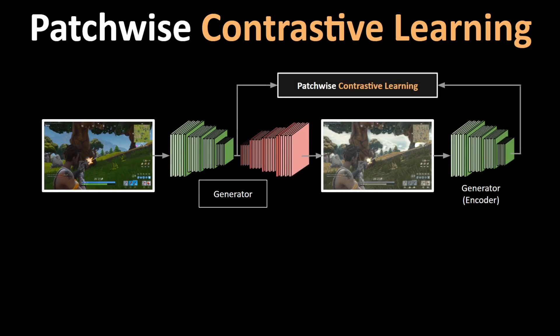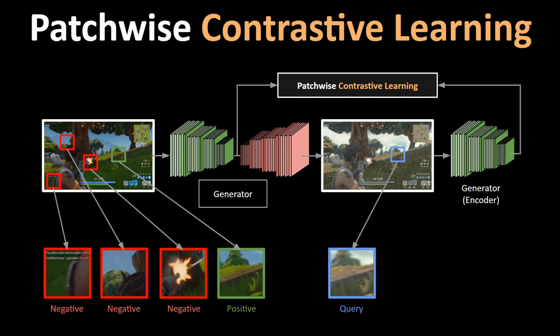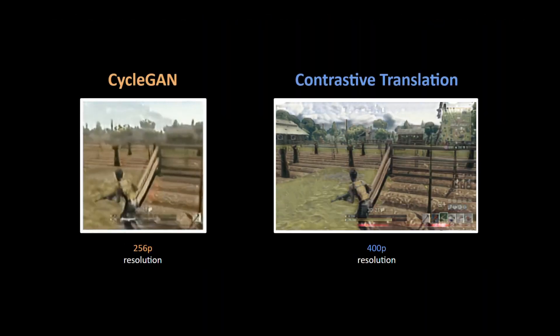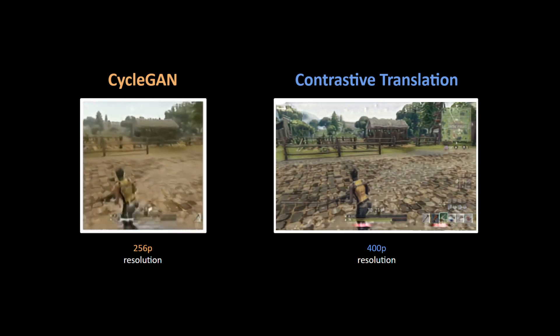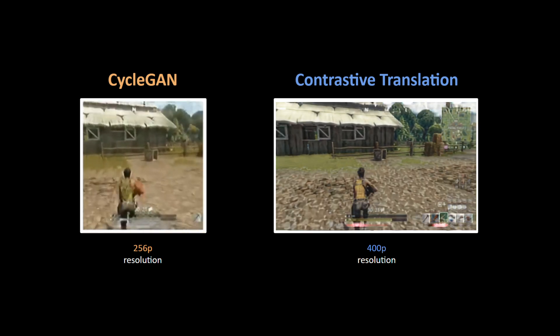First, instead of dealing with entire images at once, this method focuses on extracting patches from the input and output images. The task for our model to learn here is to identify which among the multiple input keys is a positive match for our query patch obtained from the synthesized image. This is called contrastive learning and it enables the model to learn better feature representations with self-supervision.